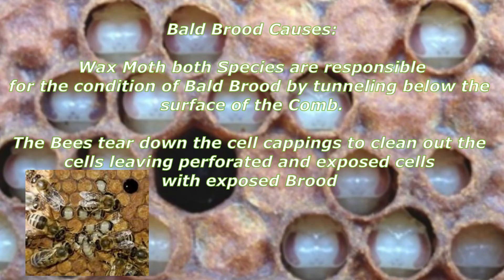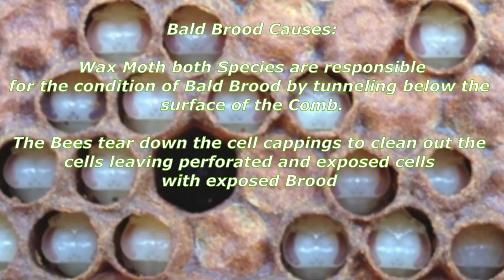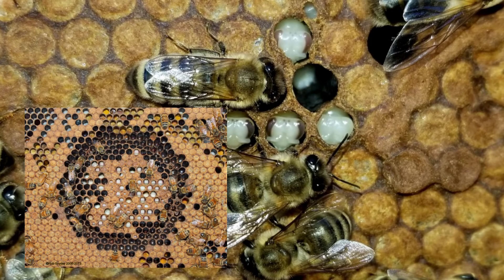The most usual cause of bald brood is wax moth larvae — both lesser and greater — tunneling below the surface of the comb. The moth larvae tunnel under the brood cappings, and the bees will tear down cell cappings to clean out cells, leaving perforated and exposed cells with brooding. Sometimes these partial cappings have a raised lip protruding from the comb surface. The condition also occurs over multiple cells in a linear pattern.